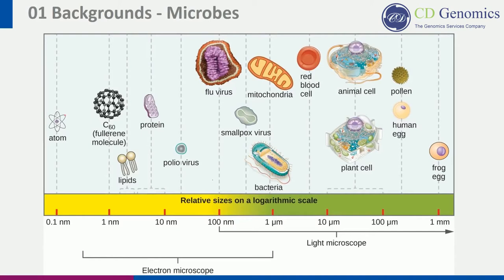A microorganism, or microbe, is a microscopic organism, which may exist in its single-celled form or in a colony of cells. They are about one-tenth the size of a typical human cell, and are found all around us, and even inside our bodies. The category of microbes includes prokaryotic microbes such as bacteria and archaea, eukaryotic microbes such as fungi, protozoan, and algae, and acellular microbes such as virus, virusoid, viroid, and prion.